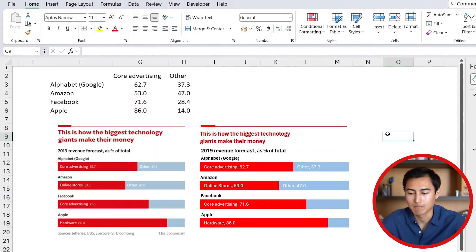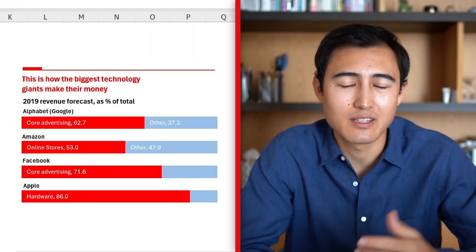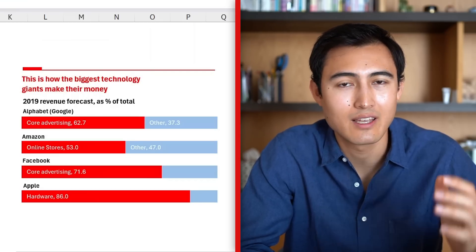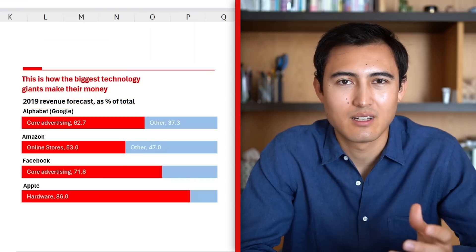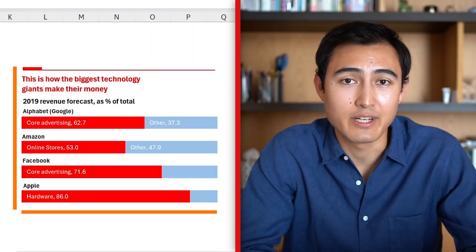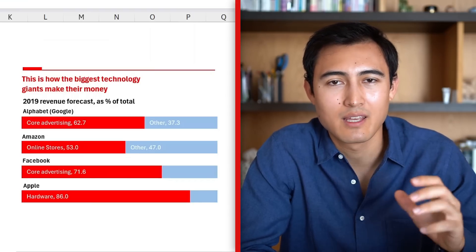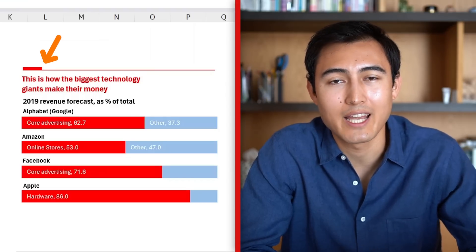That's the first chart done. To explain The Economist's approach: the title is something catchy rather than explanatory, while the subtitle actually describes what's going on. They keep visuals very minimal — no gridlines, no axes — and they always include that recognizable red shape and line on the top left so everyone knows it's The Economist.